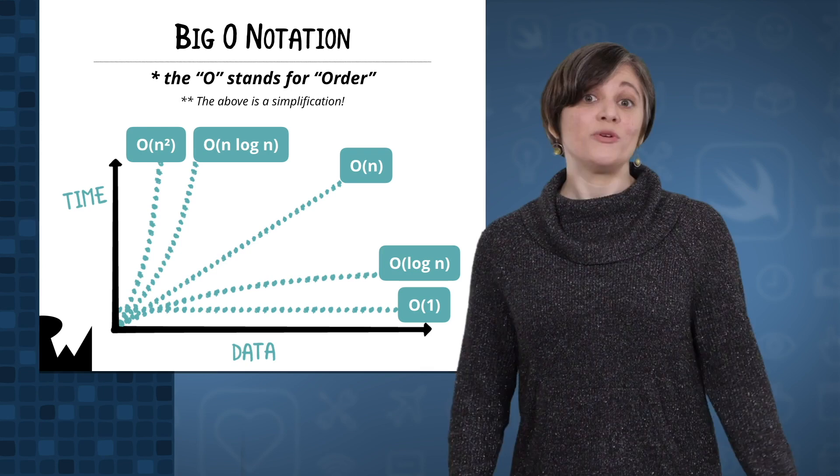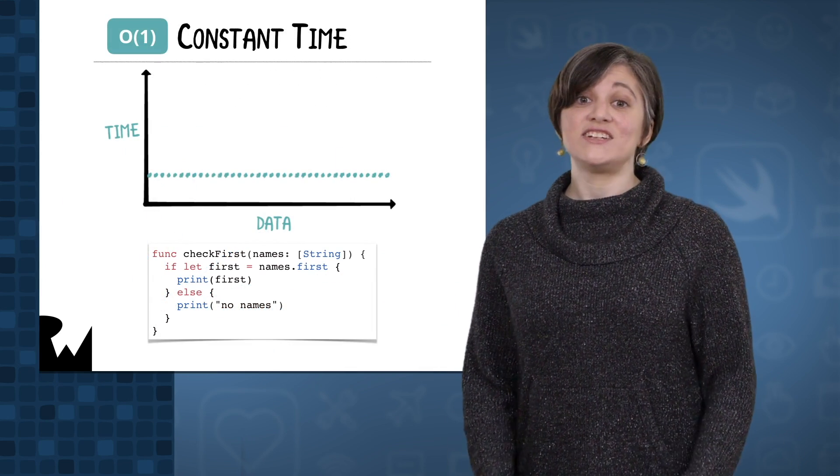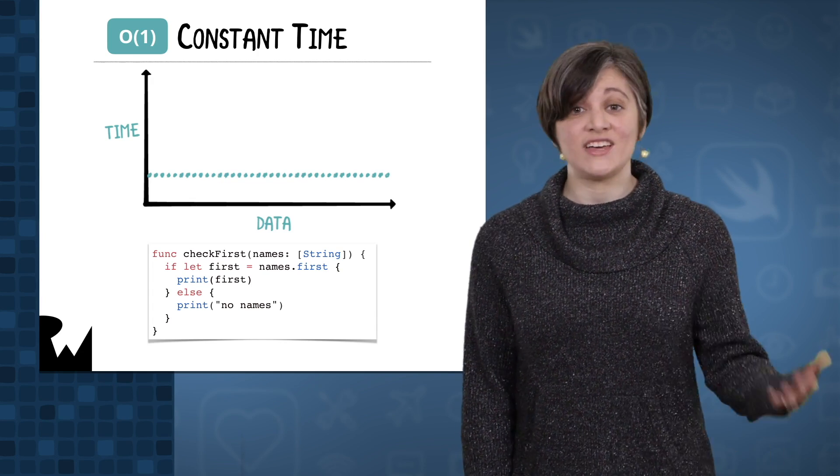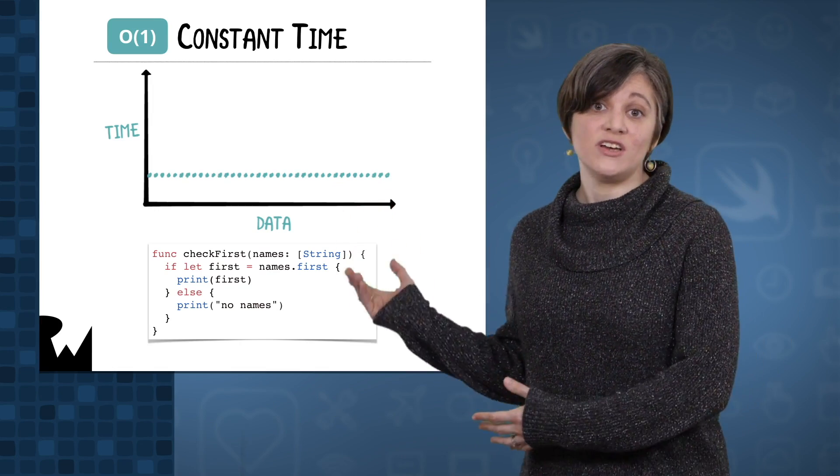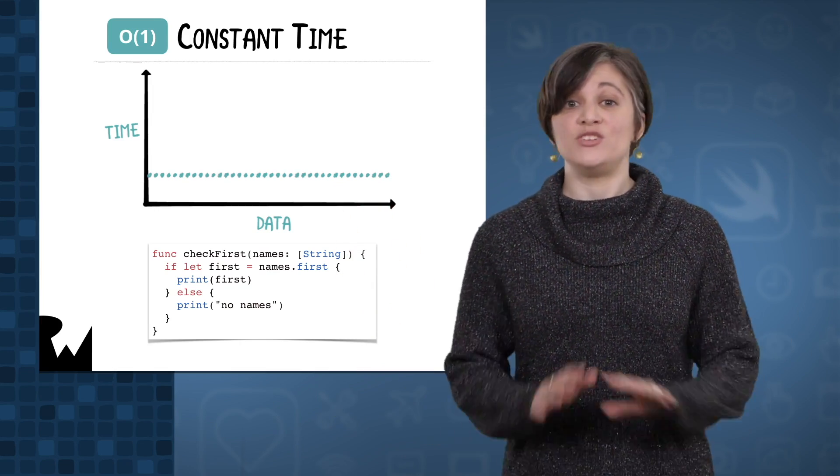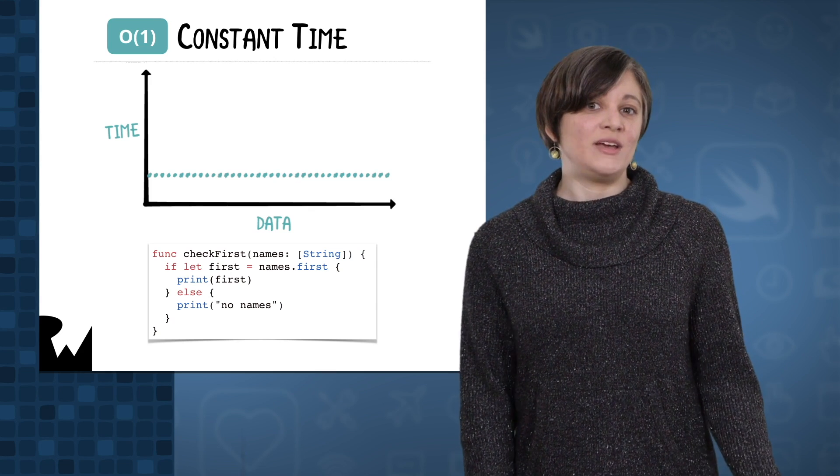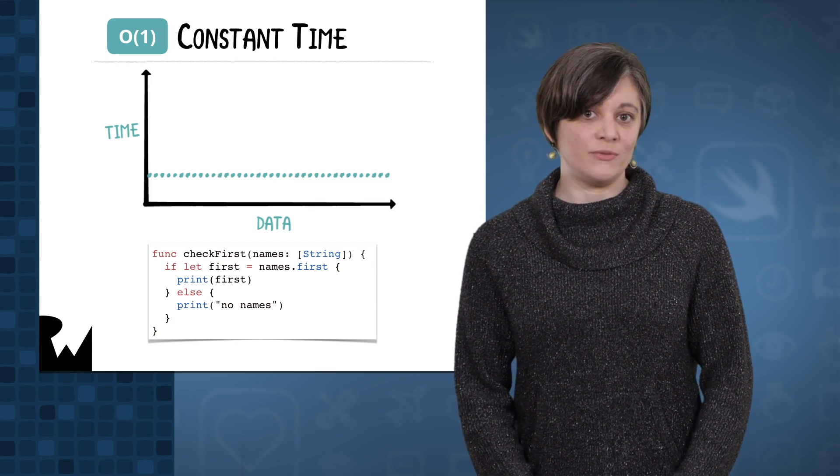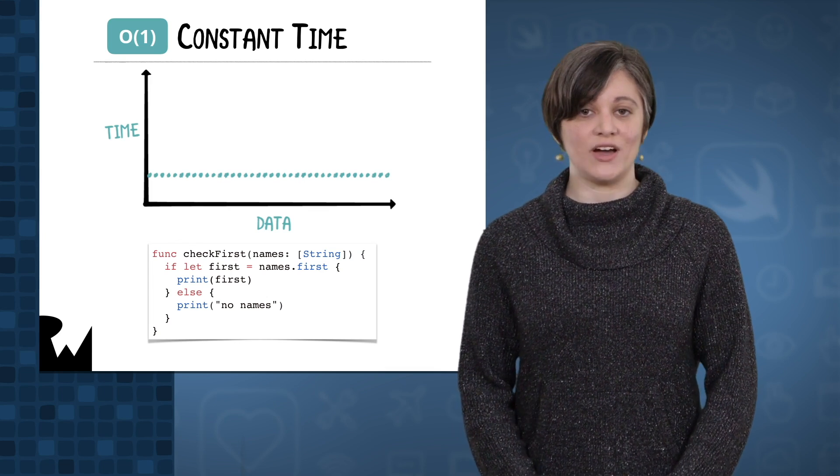Let's explore some different magnitudes of complexity in terms of time. A constant time algorithm is one that has the same running time regardless of the size of the input. So for this function, the size of the names array has no impact on how long it takes to run. Regardless of how many names there are, it only checks the first element of the array. The Big O notation for constant time is big O of 1.